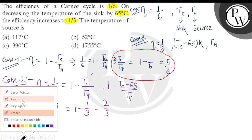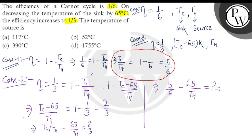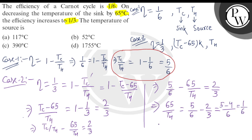We can write TC/TH minus 65/TH = 2/3. We know TC/TH = 5/6, so we substitute: 5/6 − 65/TH = 2/3. Solving, 65/TH = 5/6 − 2/3 = 1/6. Therefore TH = 65 × 6 = 390 Kelvin, which equals 117 degrees Celsius.